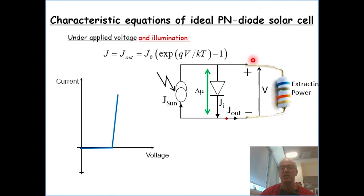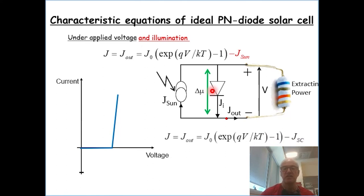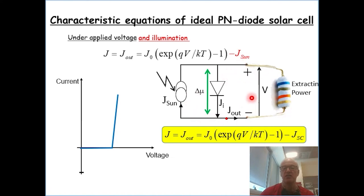If we look at this circuit, we know that the Sun current has to enter here with a negative sign. And based on this circuit, we can see that we can exchange the Sun current with the short circuit current, and we end up with a very famous equation describing the operation of a PN diode solar cell.